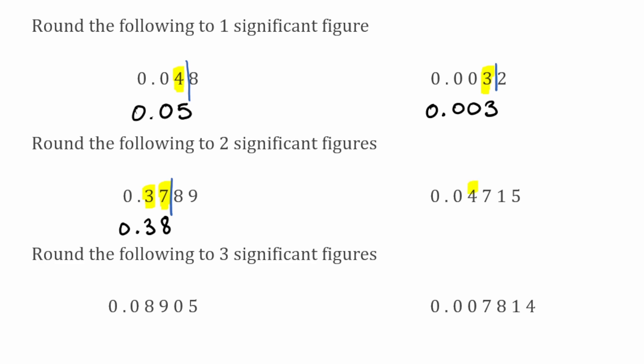Moving on again to two significant figures — four would be our first and seven our second significant figure. We draw our line down and look at the digit on the right, which is a one. Because it's a one we're going to keep the previous digit the same, so the seven will remain as a seven. Writing underneath: zero point zero four, and the seven remains. So that'd be 0.047.